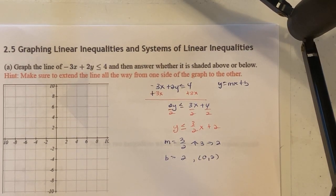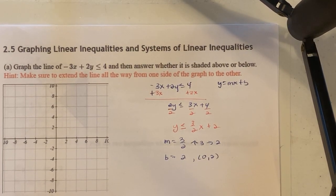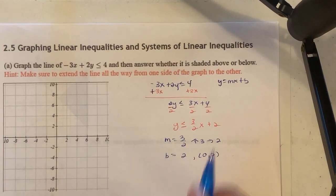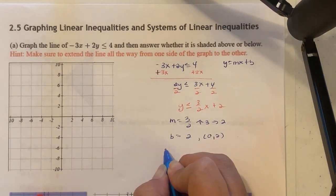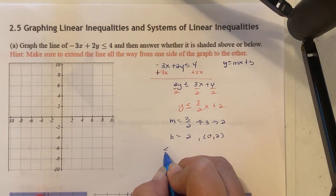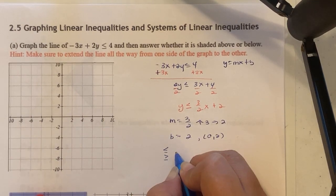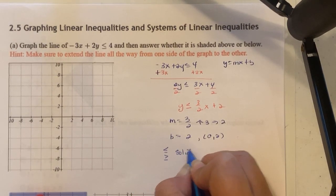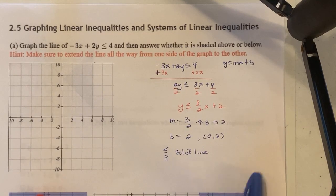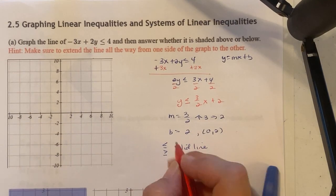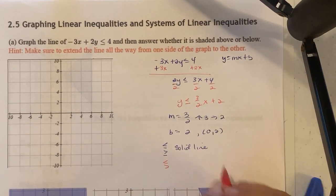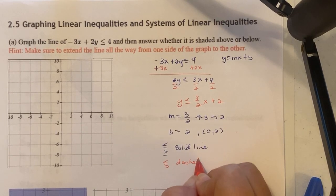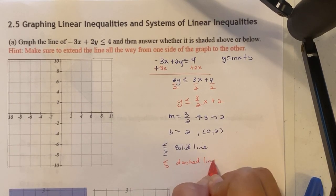The other thing you need to look at is the inequality symbol. If we have less than or equal to, or greater than or equal to, we use a solid line. If it's just less than or greater than, we use a dashed line.